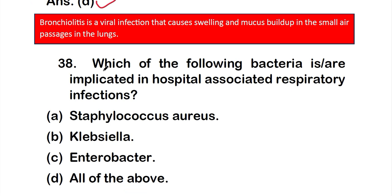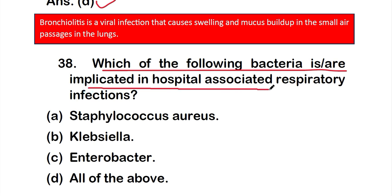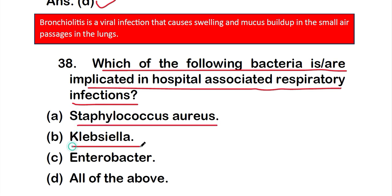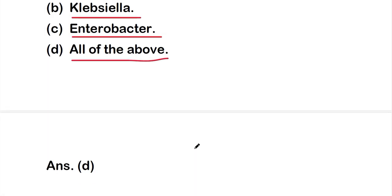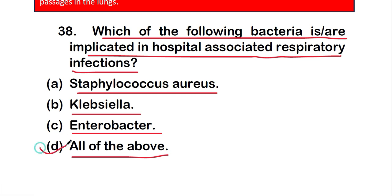Question 38: Which of the following bacteria are implicated in hospital-associated respiratory infections? Option A: Staphylococcus aureus, option B: Klebsiella, option C: Enterobacter, or option D: all of them. The right answer is option D — all of these bacteria are implicated in hospital-associated respiratory infections: Staphylococcus aureus, Klebsiella, and Enterobacter.